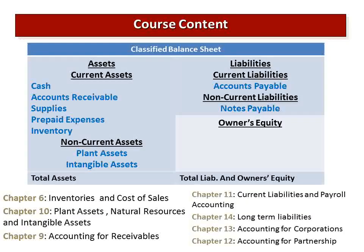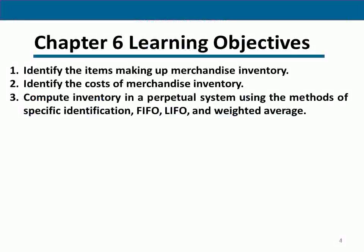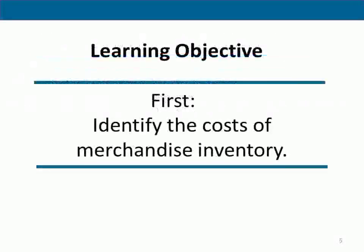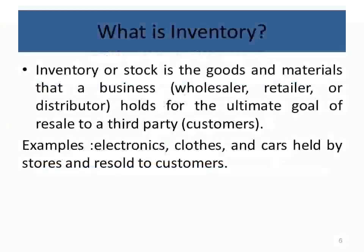In this chapter we are going to identify three learning objectives. First, we will discuss the items making up merchandise inventory. Then, how we can determine the cost of merchandise inventory. And finally, how to calculate the cost of inventory under the perpetual system using the four methods: specific identification, FIFO, LIFO, and weighted average.